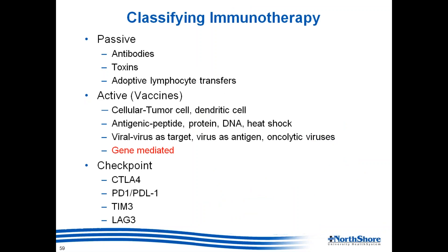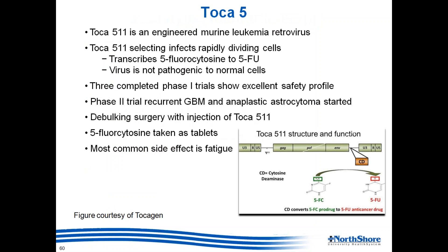Gene-mediated treatment: the TOCA-5 trial (recently completed in phase 2) used a retroviral vector inserted at surgery that converts the prodrug 5-FC into 5-FU — a well-known cancer drug — within the tumor. This circumvents the blood-brain barrier, since intravenous 5-FU does not reach the brain. The concept is sometimes called a Trojan horse approach: a drug that gets into the brain and is converted at its site of activity.